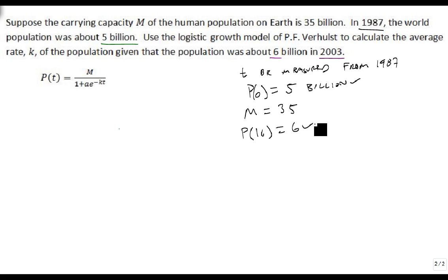We're going to need this and this in order to help us find our missing variables. Notice we still don't have our A, that's not our initial population, or our K.